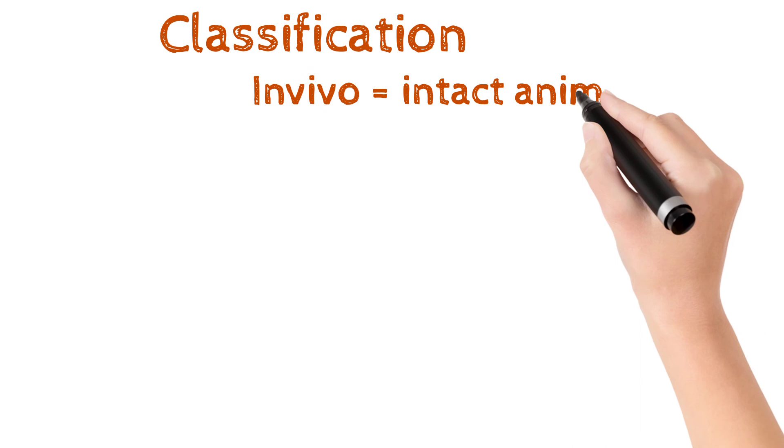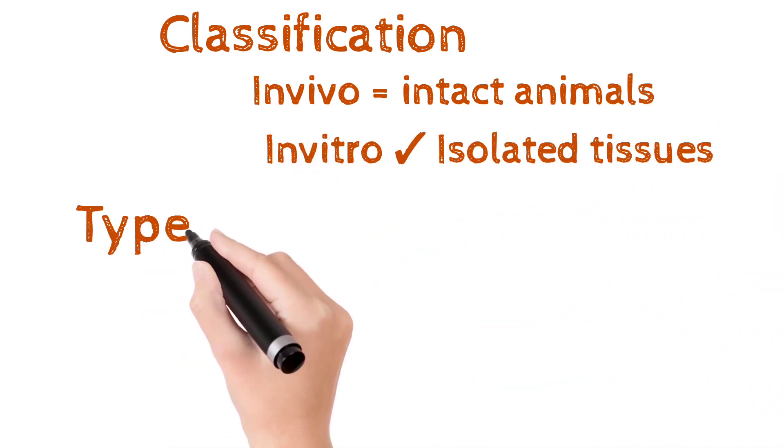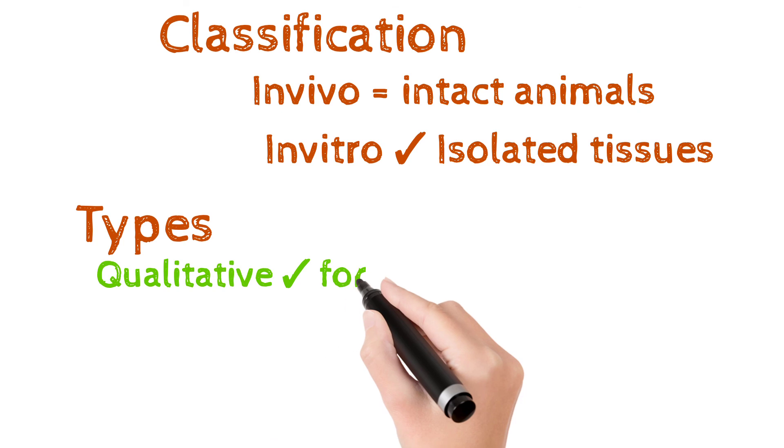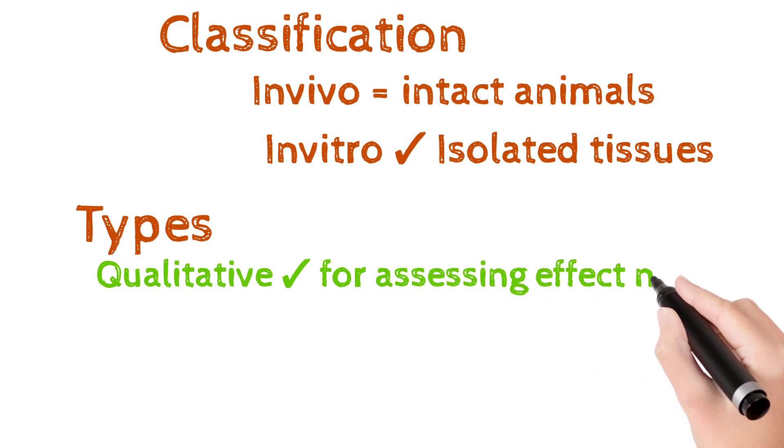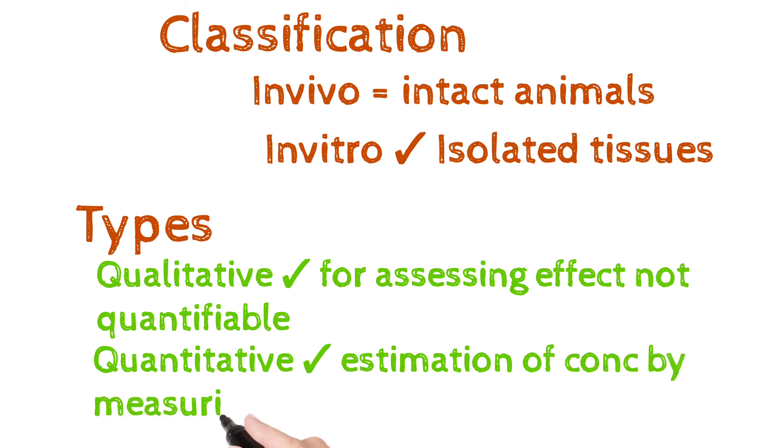Classification of bioassay: in vivo means intact animals are taken, in vitro means isolated tissues are taken. Types: qualitative for assessment of effect that is not quantifiable, quantitative estimation of concentration by measuring biological response.